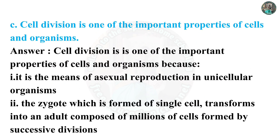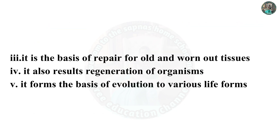C. Cell division is one of the important properties of cells and organs. Answer: 1. It is the means of asexual reproduction in unicellular organisms. 2. The zygote, which is formed of a single cell, transforms into an adult composed of millions of cells formed by successive divisions. 3. It is the basis of repair for old and worn-out tissues. 4. It also results in regeneration of organisms. 5. It forms the basis of evolution to various life forms.